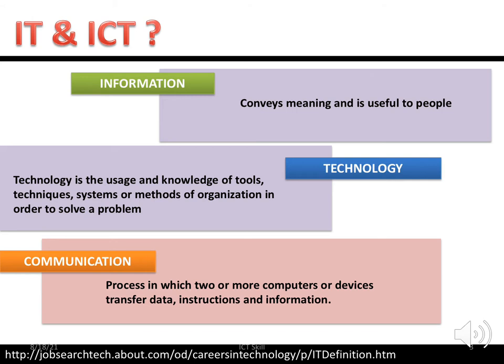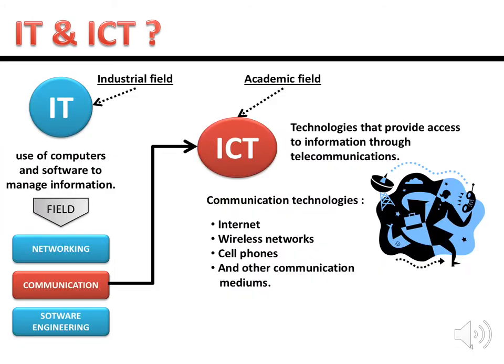Communication is more about a process involving more than one computer or device to transfer data, instructions, and information. When we combine information, technology, and communication together, we call it ICT. There are two fields: IT is an industrial field where computers and software are used to manage information, covering networking, communication, and software engineering.